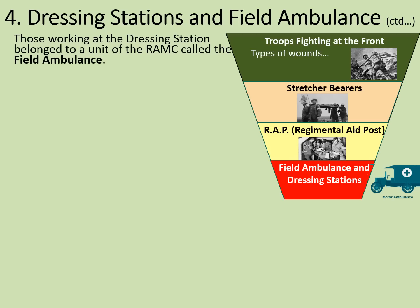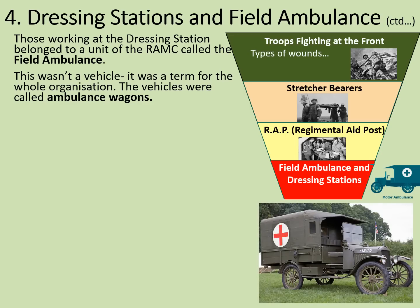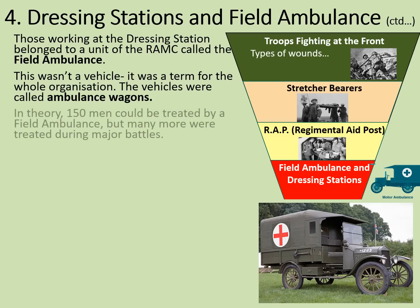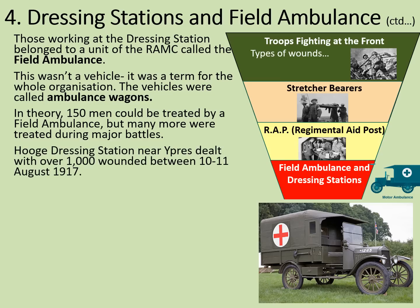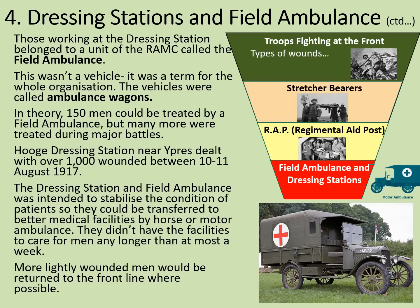Those working at the dressing station belonged to a unit of the RAMC called the field ambulance — this wasn't a vehicle, it was a term for the whole organisation. The vehicles were called ambulance wagons. In theory, 150 men could be treated by a field ambulance, but many more were usually treated during major battles. Hoos Dressing Station near Ypres dealt with over 1,000 wounded between the 10th and 11th of August 1917 during the Third Battle of Ypres. The dressing station and field ambulance was intended to stabilise patients so they could be transferred to better medical facilities by horse or motor ambulance, and they didn't have the facilities to care for men for any longer than at most a week.